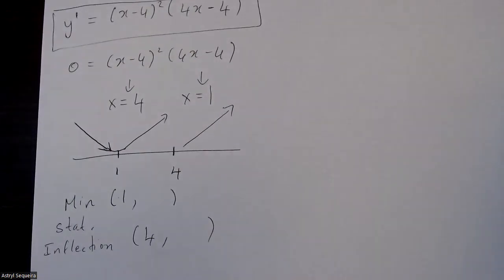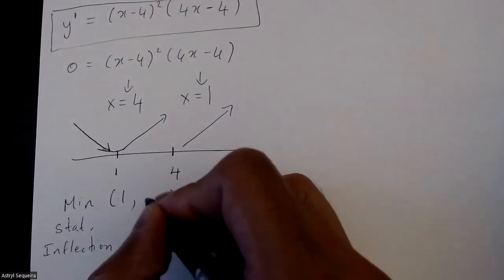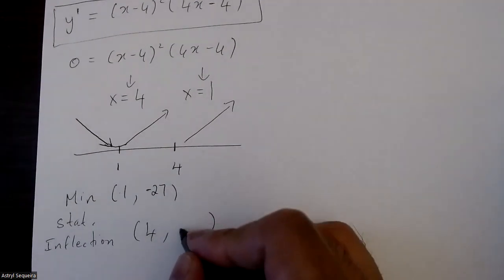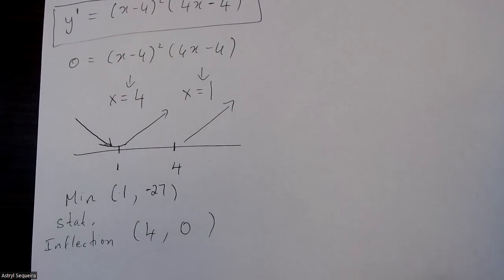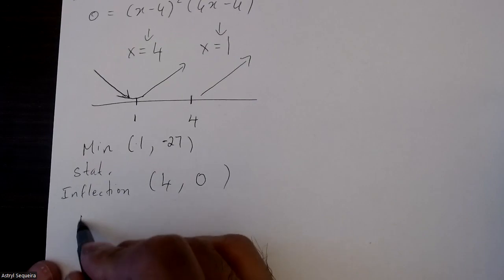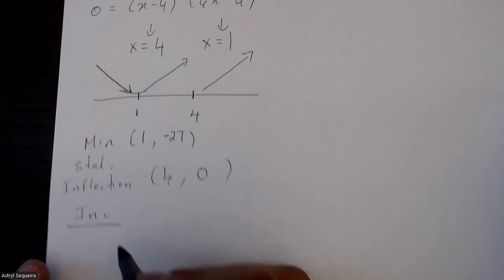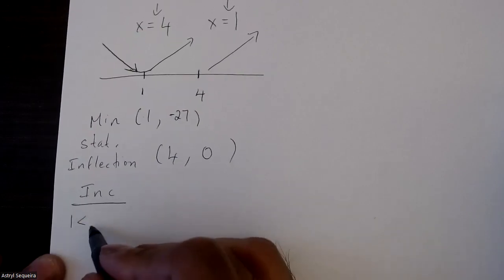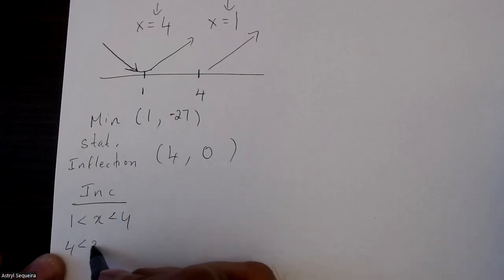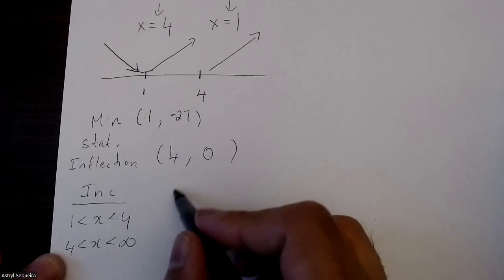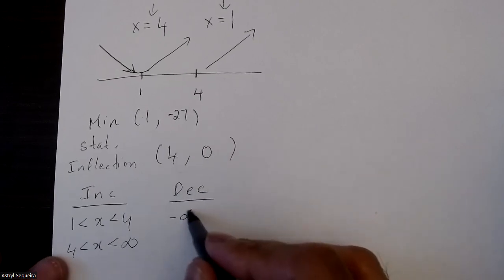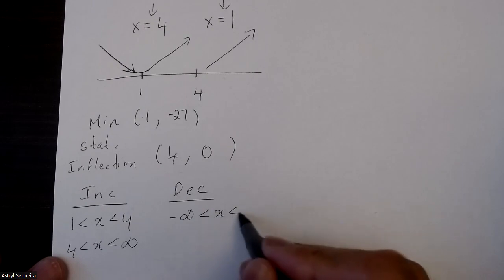For x = 1, subbing into the original equation gives y = negative 27. For x = 4, subbing in gives y = 0. My intervals of increase are from 1 to 4 and from 4 to infinity. My interval of decrease is from negative infinity to 1.